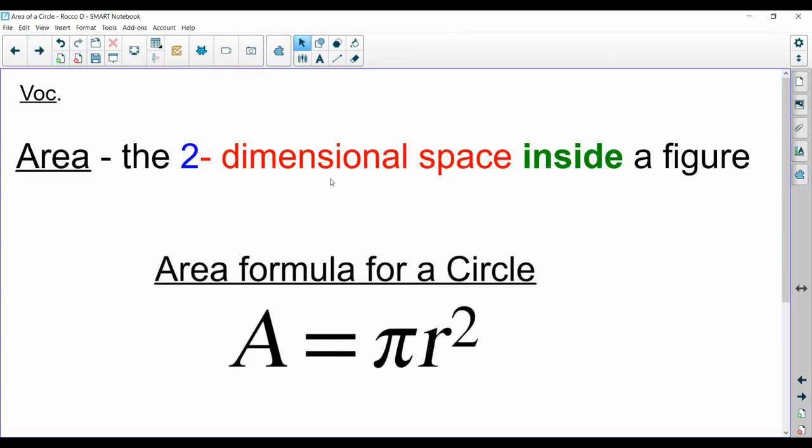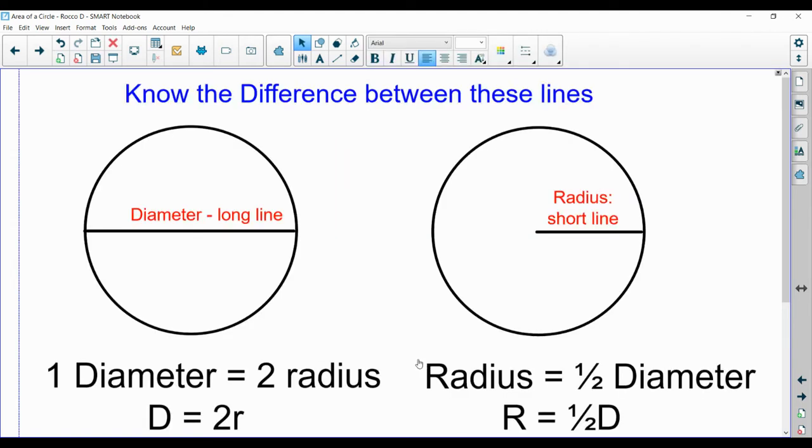Area is the two-dimensional space inside of a figure. The area formula is A, for area, equals pi r squared. That's pi times r times squared. The most important thing you should know is these two lines here. You should know the difference between these two lines. You have a long line, which is called the diameter, cuts a circle in half. And you have a short line, which is called the radius. They're going to give you one or the other. Your job is to know which one you're dealing with, because that's going to help you find the area.